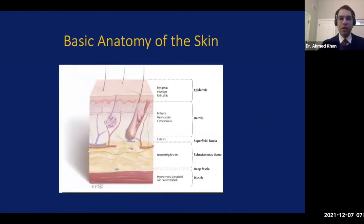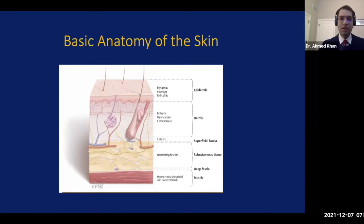It is essential to know about the basic anatomy of the skin as it pertains to these different infections, as these various entities that comprise skin and soft tissue infections affect and invade various depths of the skin and soft tissue barrier. This may involve either the epidermis, the dermis, down through the superficial fascia, through the subcutaneous tissue, through the deep fascia, and through the muscle. There are a number of entities, all of which are listed on this slide, that we will talk about.